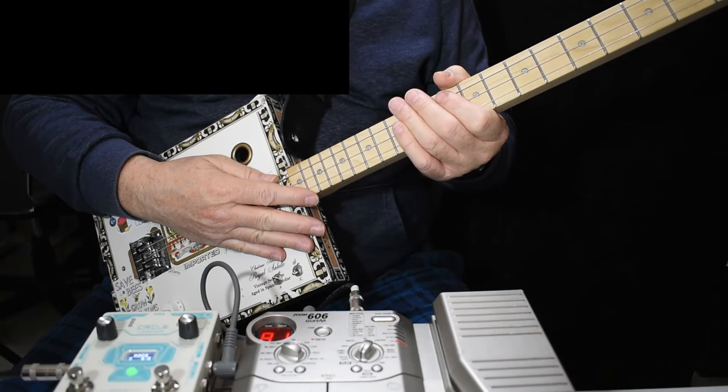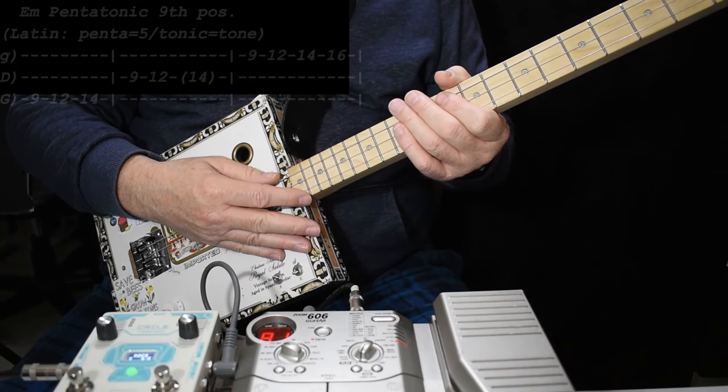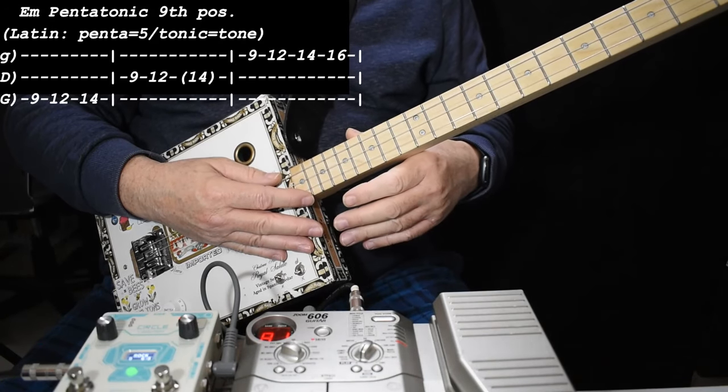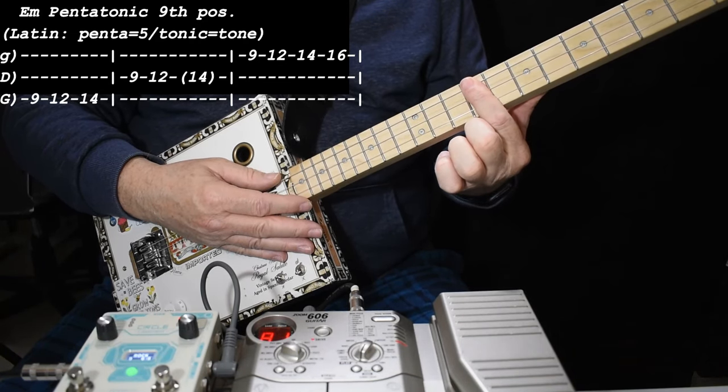We're going to use those two chords and we're going to use the E minor pentatonic scale. Penta meaning 5. Tonic meaning tone in this case. So that starts on the, we're doing in the ninth position, E, up here.